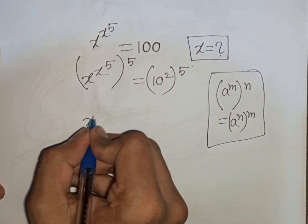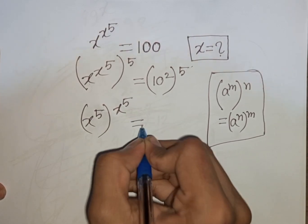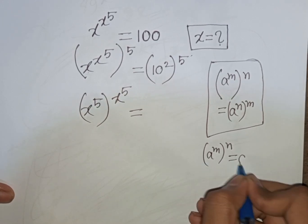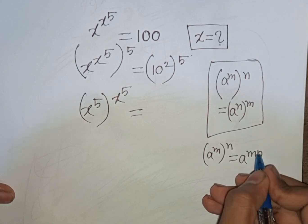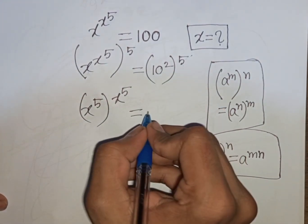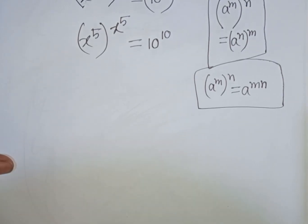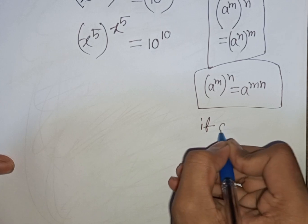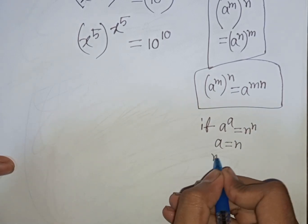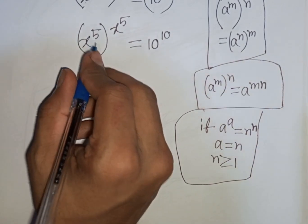So we can write x power 5, bracket power x to the power 5. Then we apply the formula a power m bracket power n is equal to a power of m times n. According to this formula, 10 power 2 bracket power 5 can be written as 10 power of 2 times 5, that means 10 power 10. Now we apply the rule: if a power a equals n power n, then a equals n.